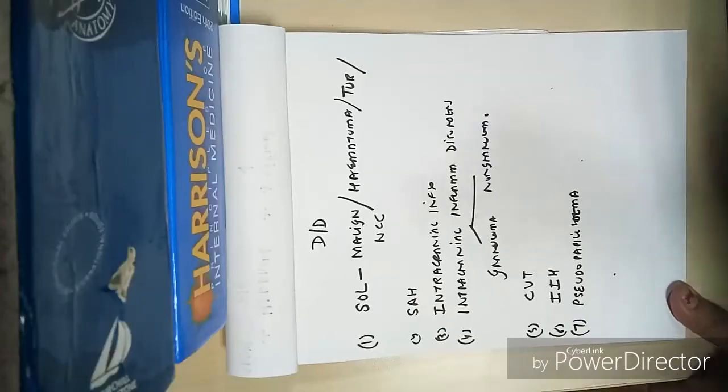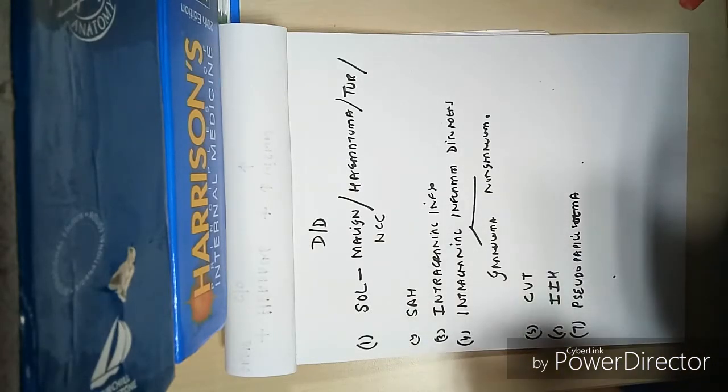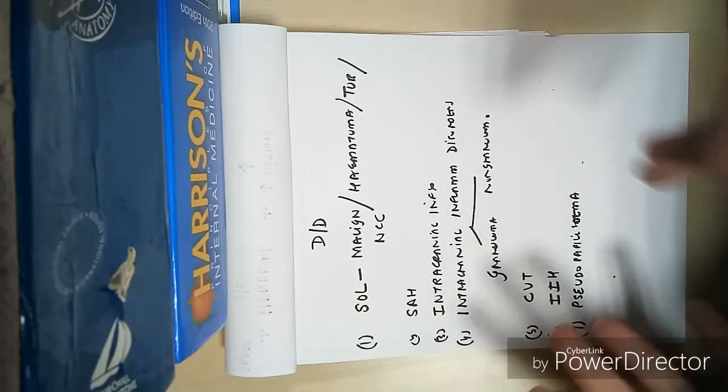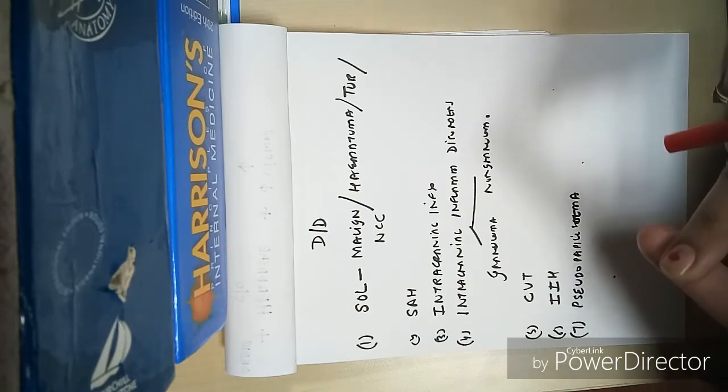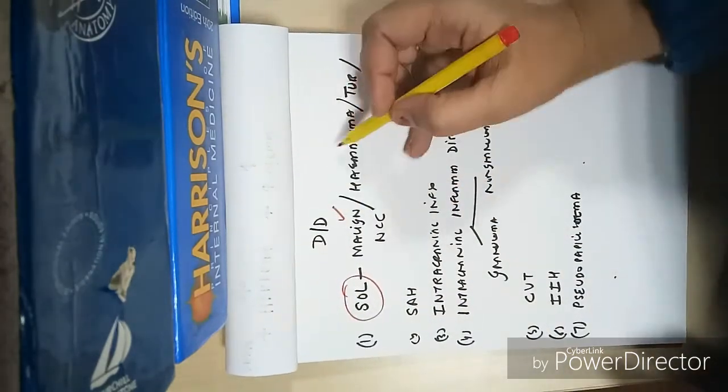What are the various differential diagnoses? In this patient who is an obese female with past history of taking tretinoin and now presenting with headache and decreased vision, first possibility we will always keep is a space-occupying lesion - any space-occupying lesion which can be a malignancy, hematoma, tuberculoma, or NCC.